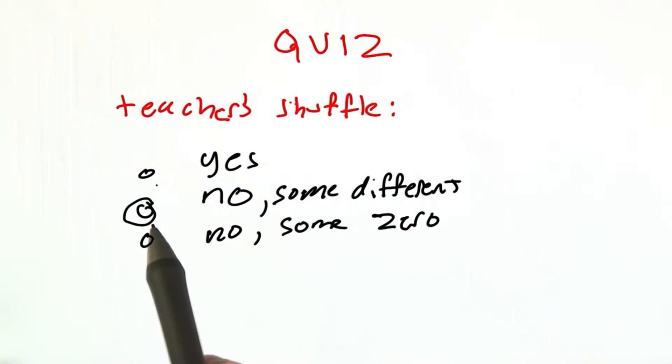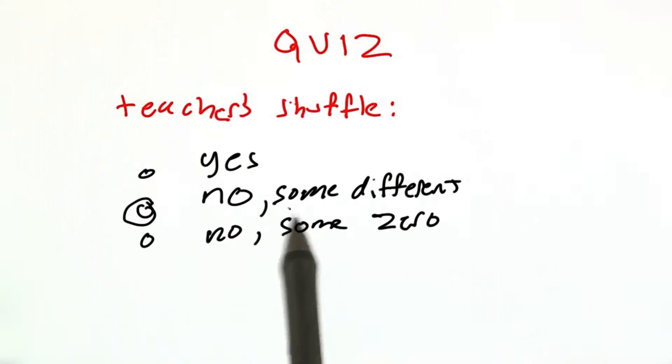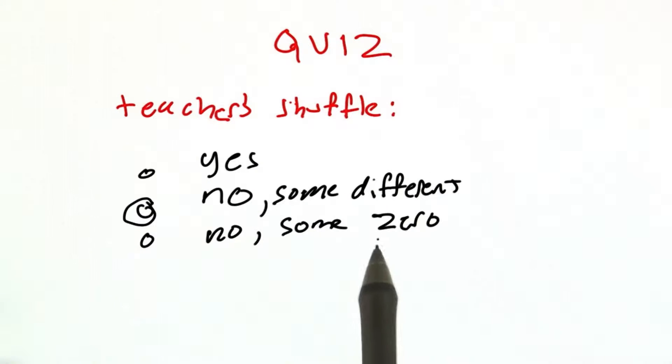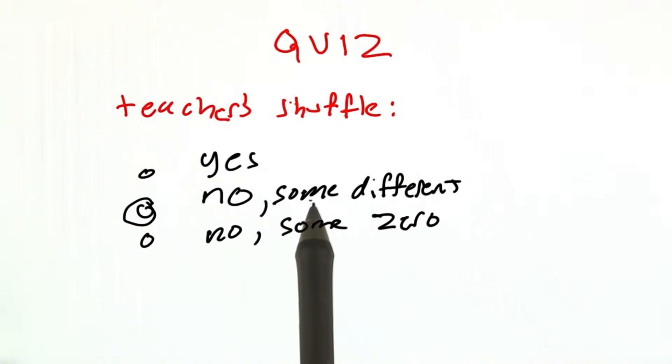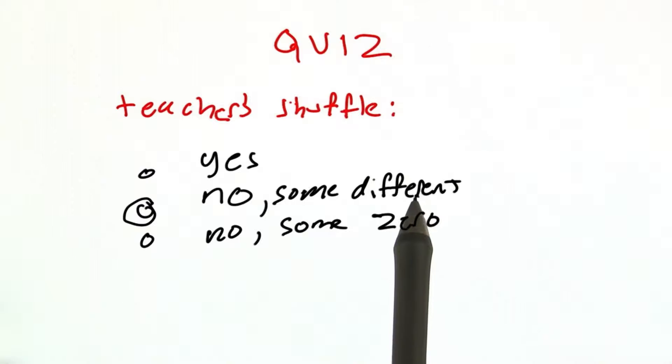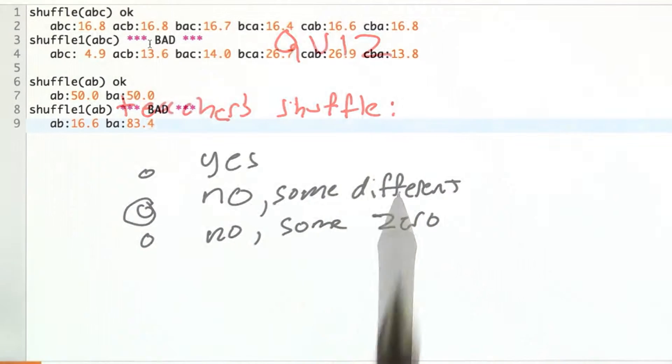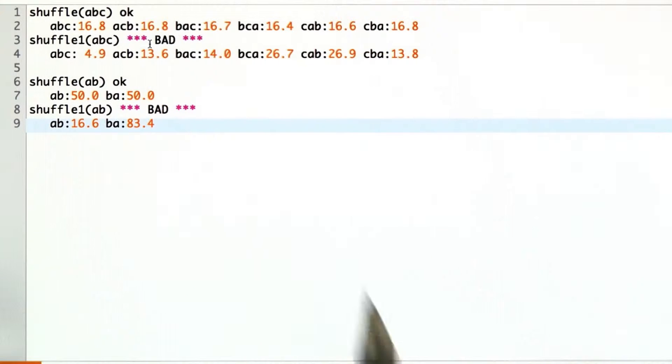Every permutation has a non-zero probability, but they don't all have the same probability. Let's see how I discovered that.